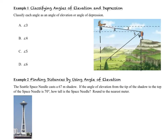Our first question A is asking us about angle 3. Angle 3 is the angle between the horizontal that starts at the bird and goes downward towards the man with the binoculars — the angle between the horizontal and the diagonal between the man and the bird. It is an angle of depression. Now, let's take a look at angle 4. Angle 4 is the angle that starts at the man with the binoculars and goes upward towards the bird, between the horizontal line of sight and the bird. That means angle 4 is an angle of elevation.